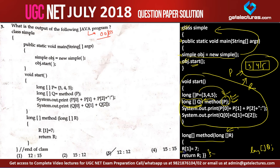Now we have r[1] equal to 7, that is on the first index location. Index locations are 0, 1, and 2. On the first index location we are storing the number 7. Now we are returning r, that means we are returning the reference to this same array. That reference is also stored in q because of this line — so p and q both are pointing to the same location.